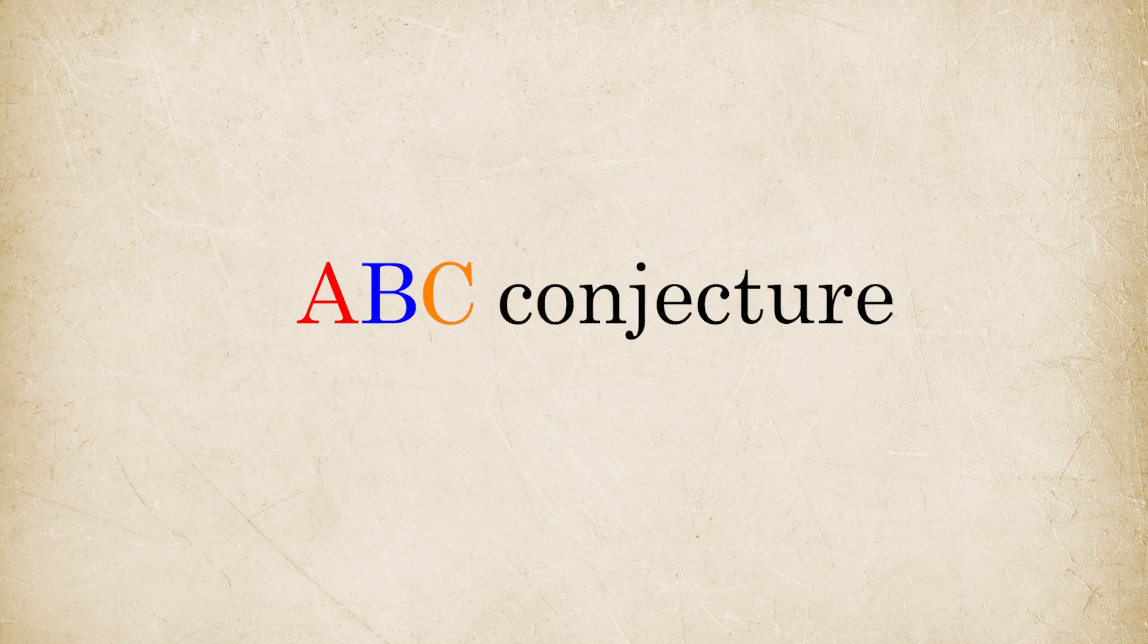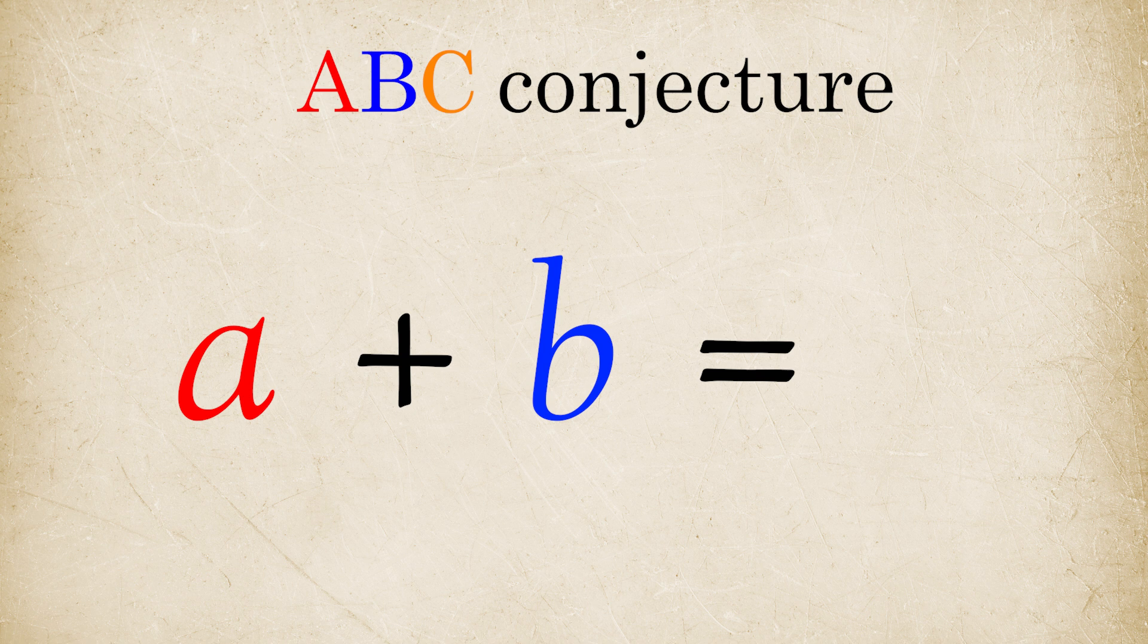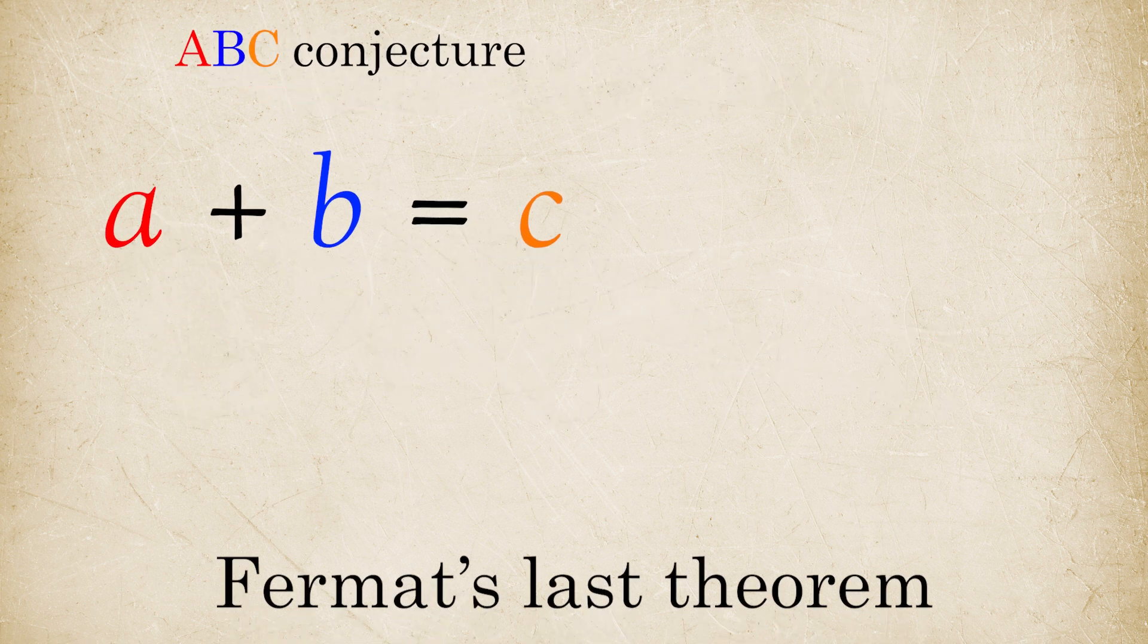ABC conjecture is a statement about this simple equation: A plus B equals C.